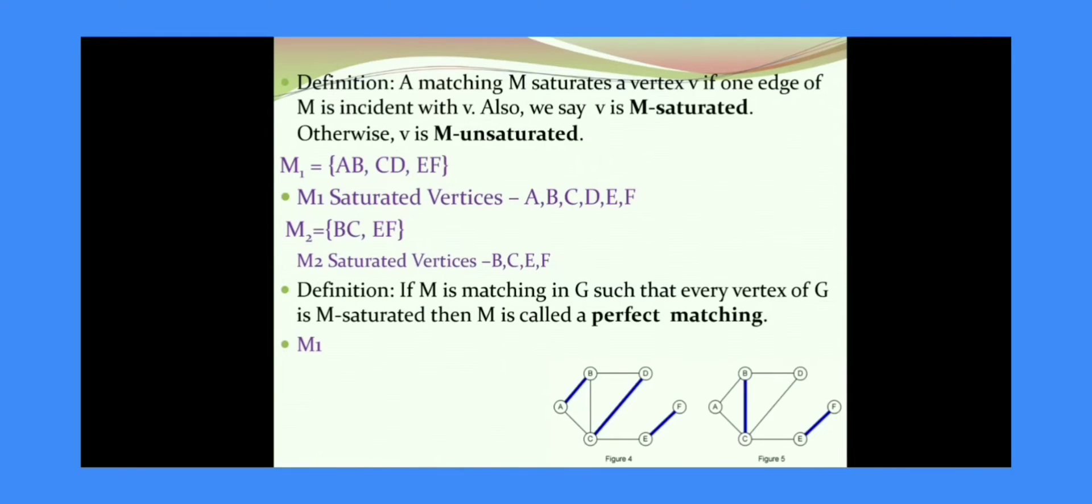The next definition is when is a vertex V said to be M-saturated. A matching M saturates the vertex V if one edge of M is incident with V. Now consider the matching M1: AB, CD, EF. So the edge AB saturates the vertices A and B, that is the end vertices.